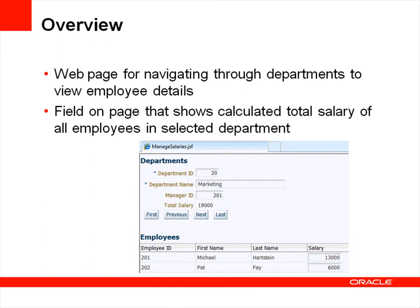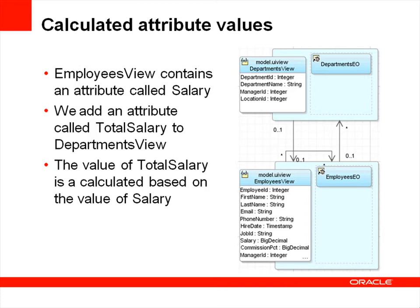In this example, we're building a page that allows users to navigate through departments to view the details of the employees in each department. The page includes a field called Total Salary that shows the total salary of all employees in the department. We'll set up the page so that the value of Total Salary refreshes automatically when the value of a salary changes. There is a master-detail relationship between the two view objects Departments View and Employees View. Employees View contains an attribute called Salary.